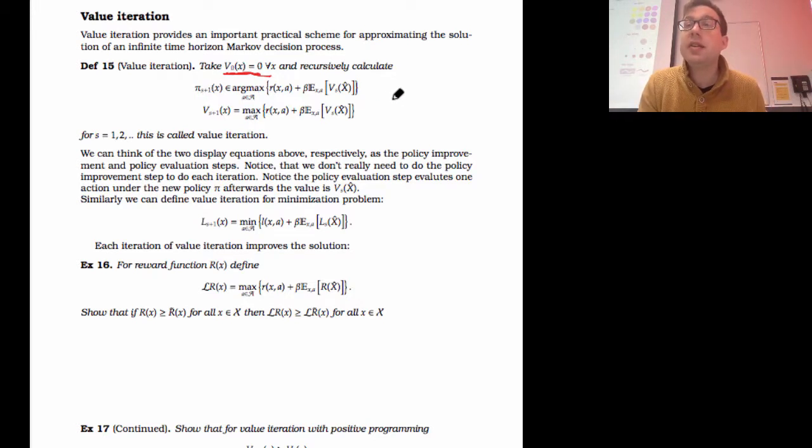So that's my policy improvement step. Then we need to evaluate the policy. We just say that the new value of the policy is just the maximum value of the argument that I maximized. So v of s plus one, the next iteration, I just take the value to be the maximum reward plus the value from the last step.